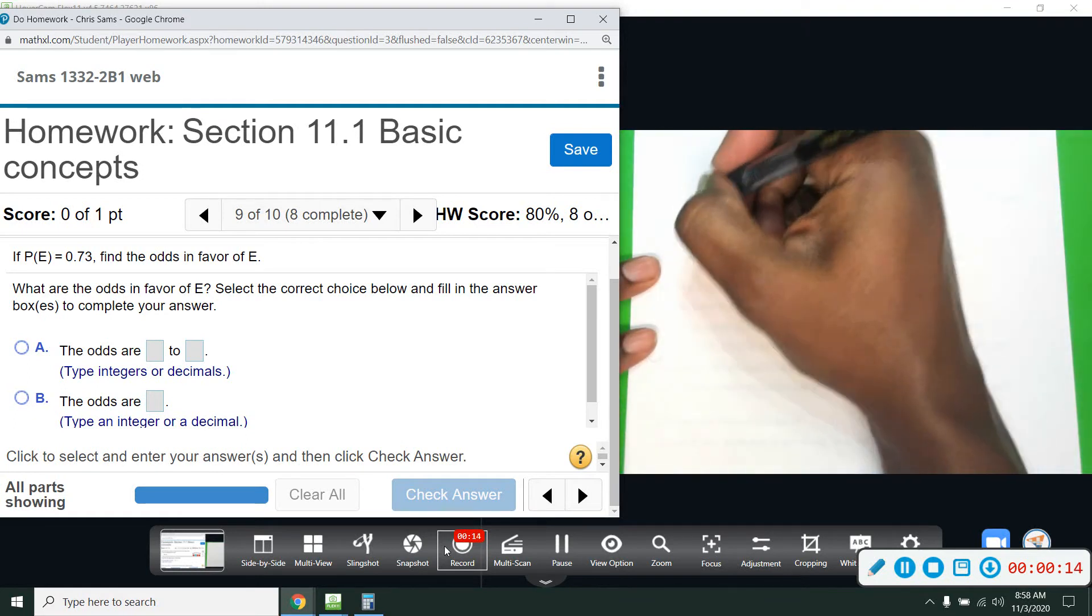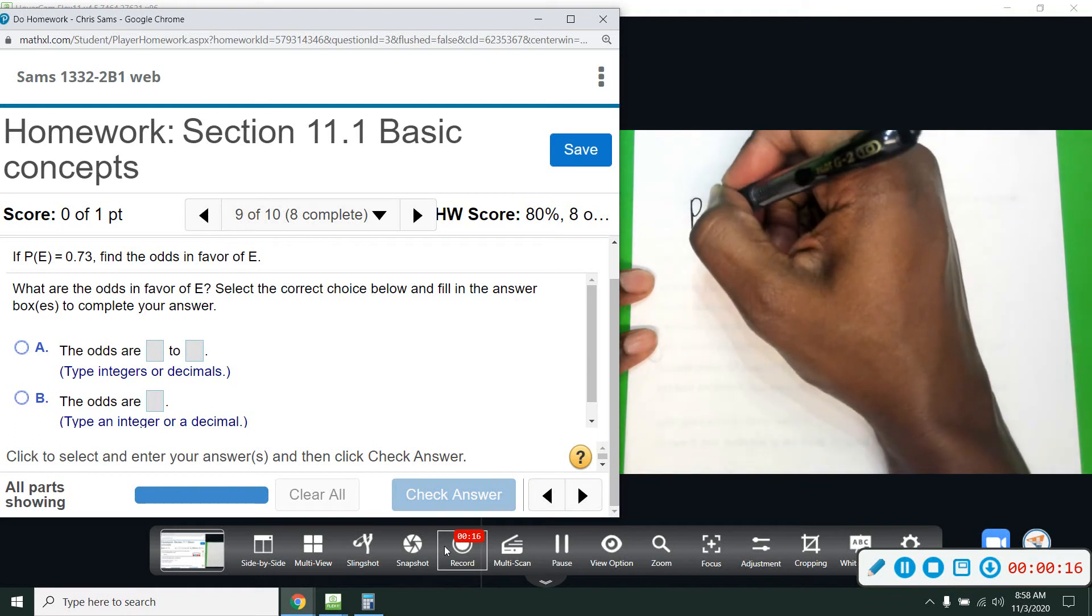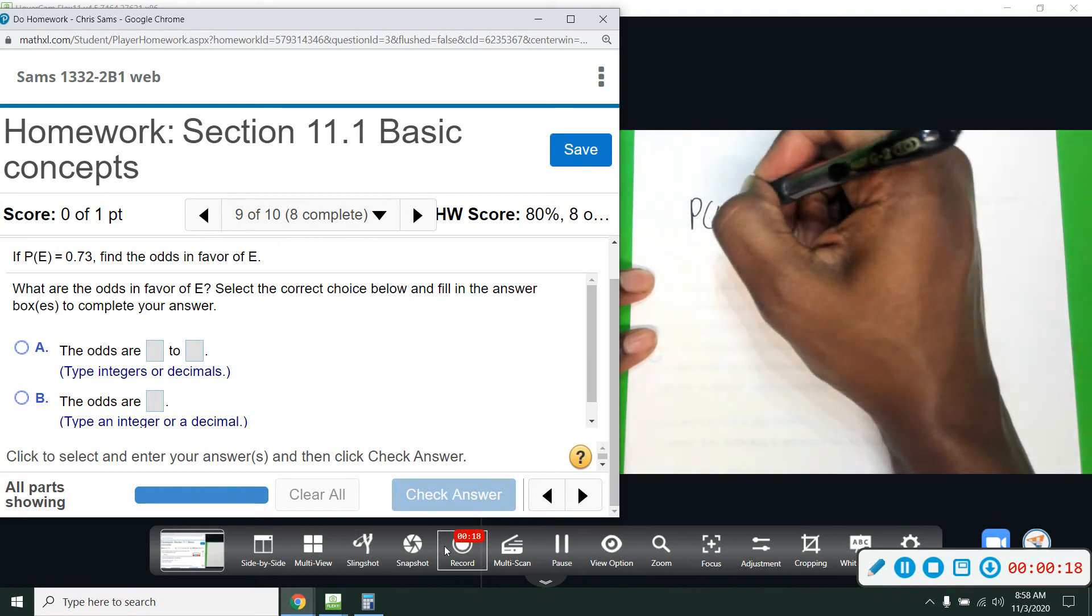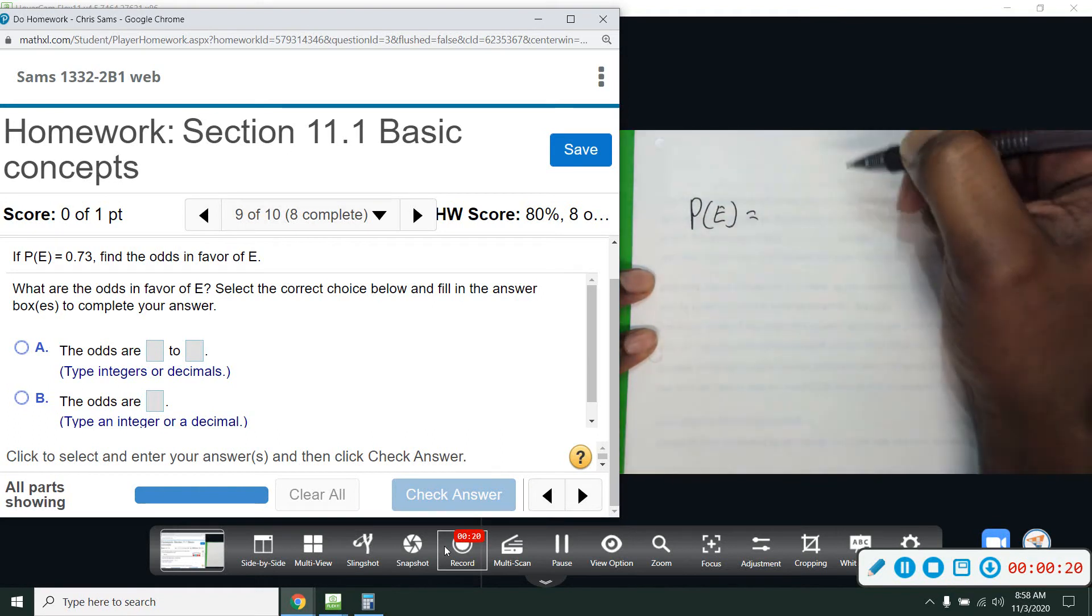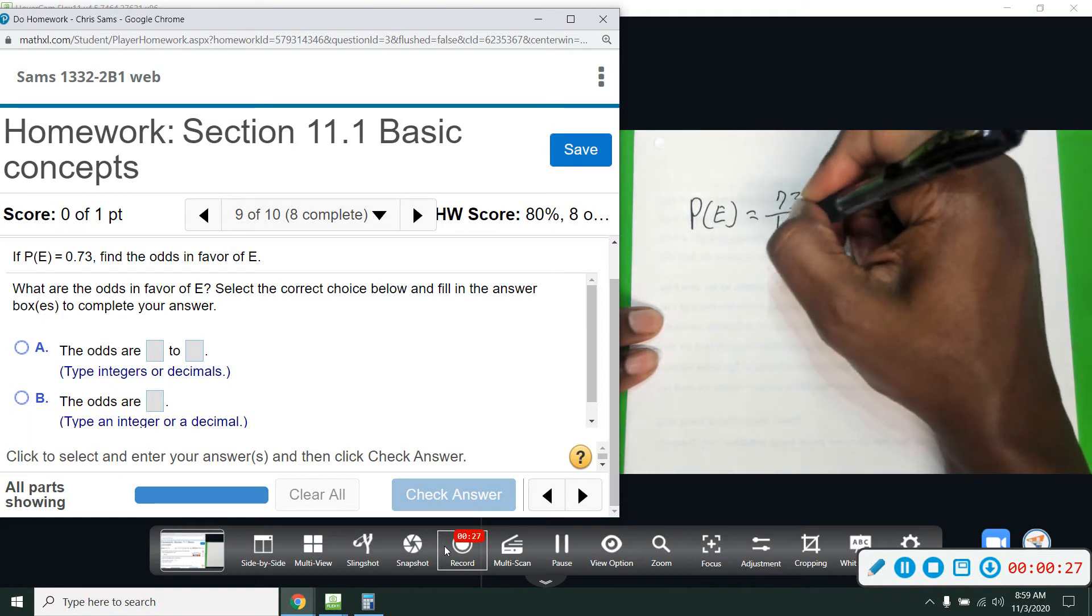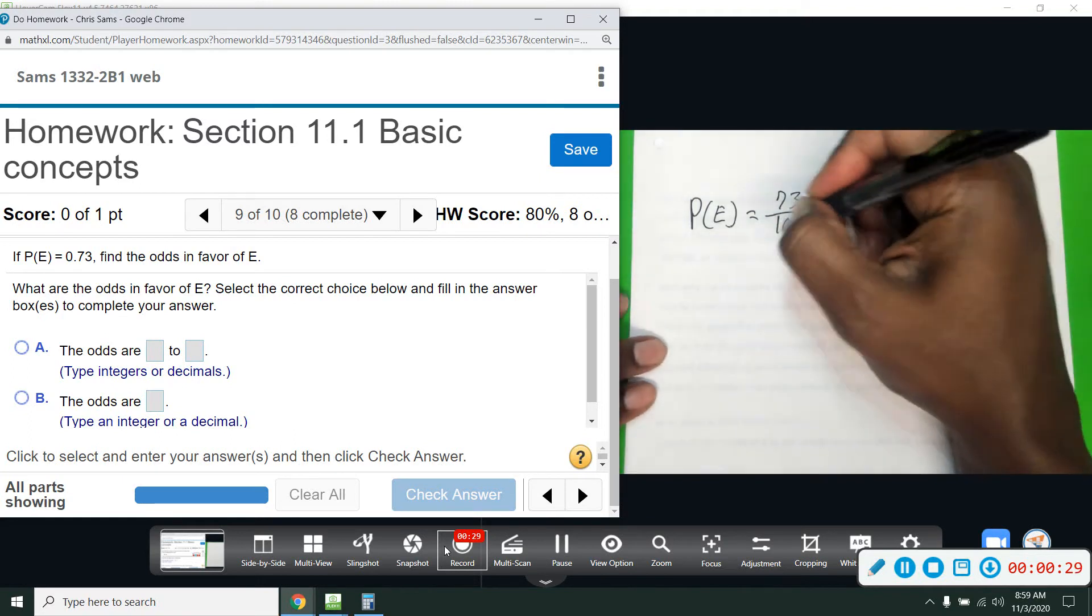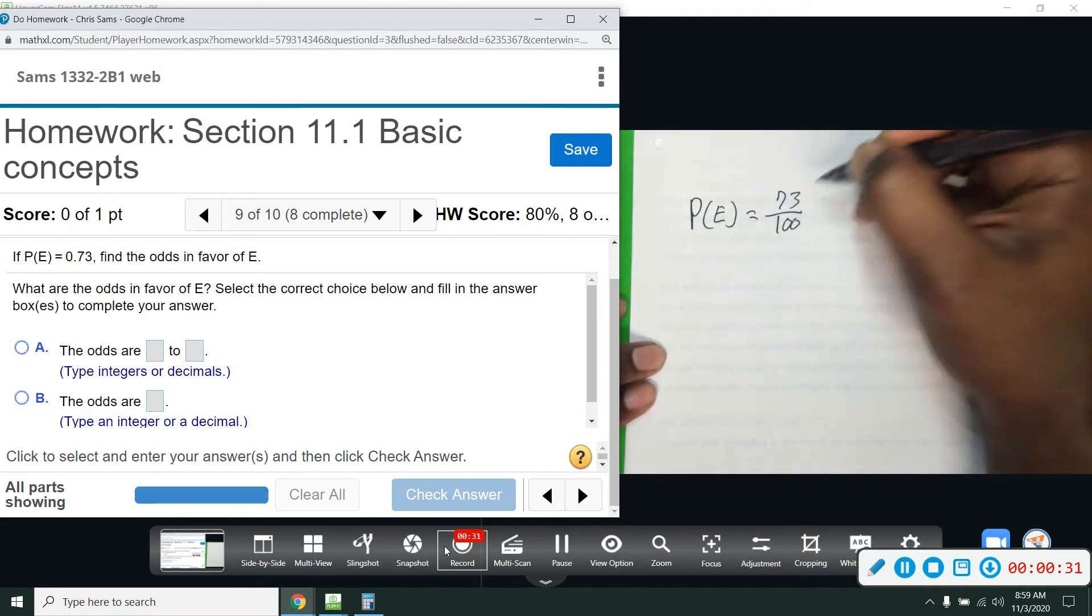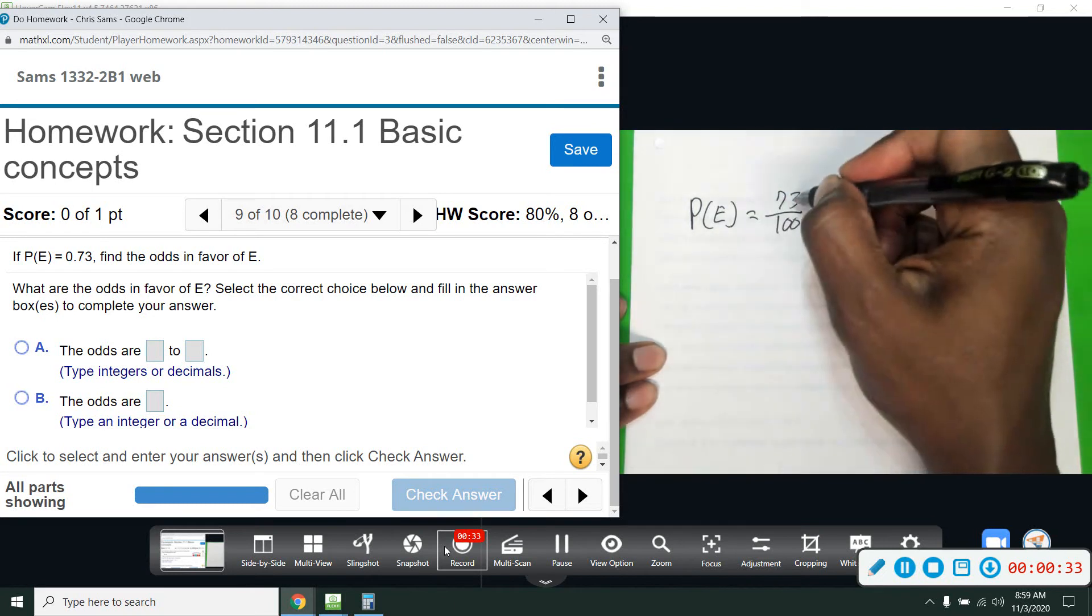So when they give you probability, kind of like I was giving a small example of in the first example, probability of E is 0.73. So if we put that in fraction form, it's basically 73 over 100. So this is the probability.